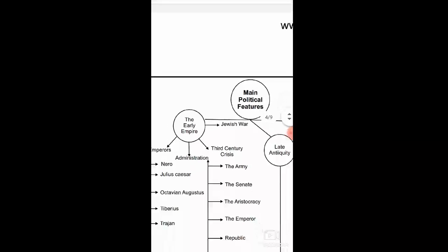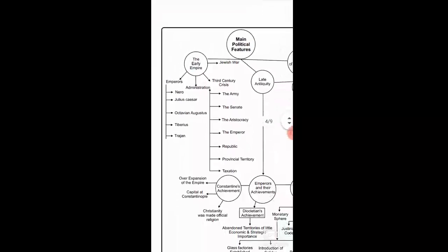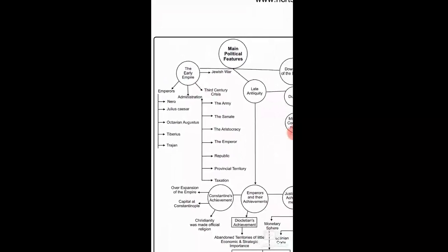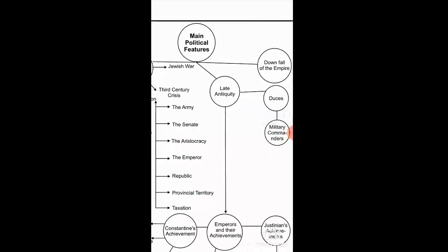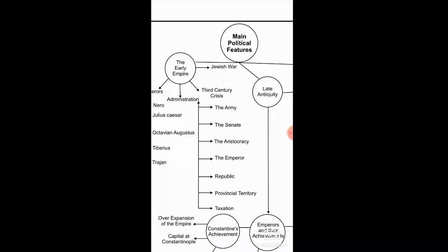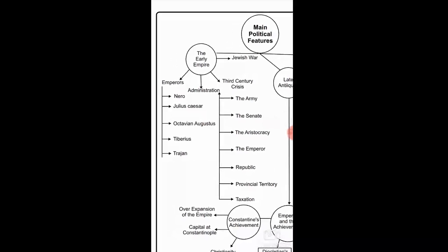Now we move to the political features of Roman society. When we discuss the political features, we divide Roman history into two major categories: first is the early empire, and second is the late empire — in the late empire or late antiquity, we will also discuss the downfall of the Roman Empire. The early empire covers the time from the first to the third century.